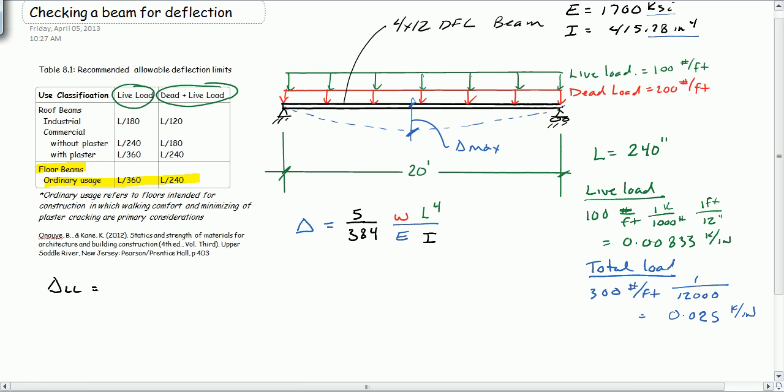Delta live load is equal to 5 over 384 times our live load here, so that's going to be 0.00833 kips per inch, and we're going to multiply that by 240 inches to the fourth.